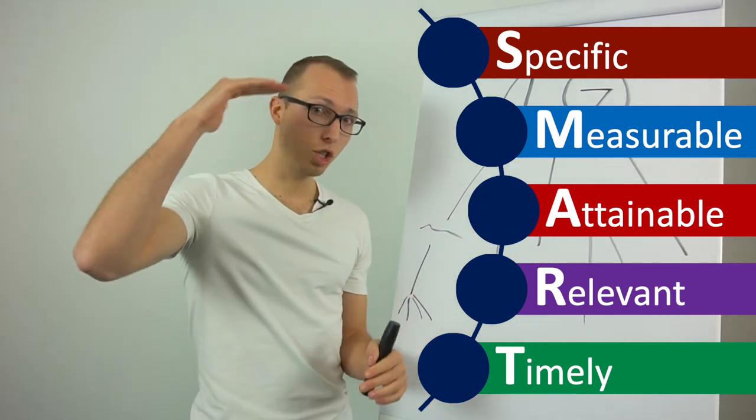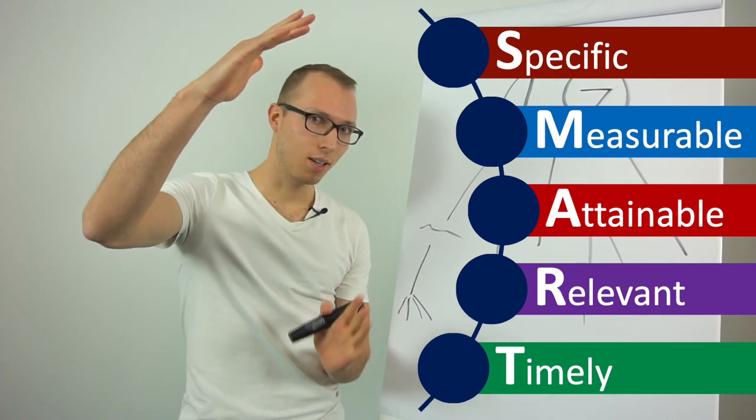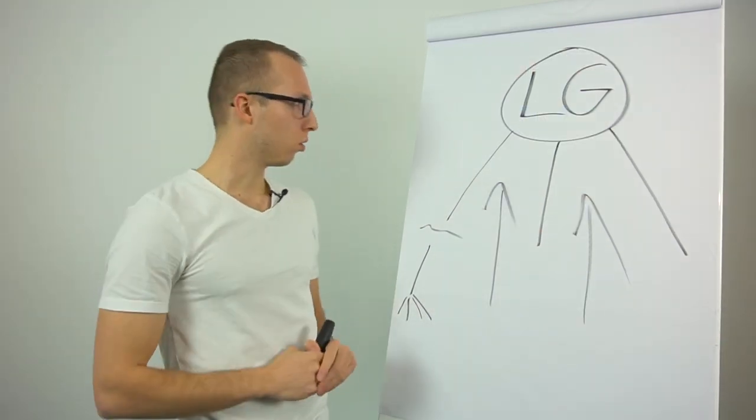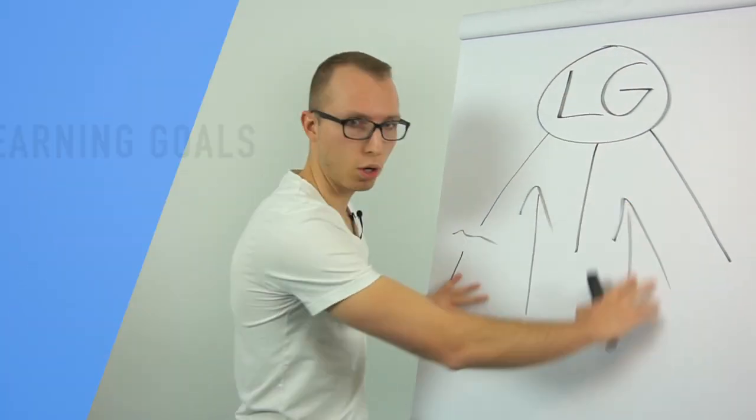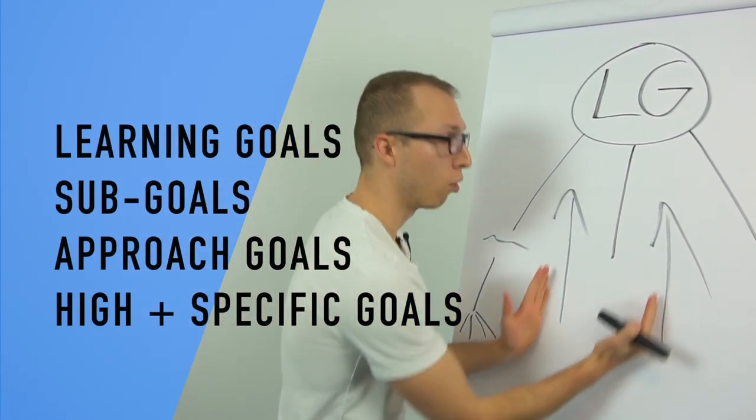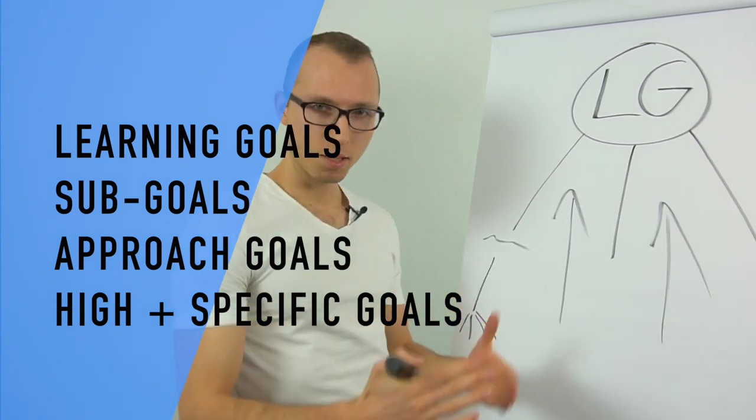Timely goals which is also again connected to being specific. Of course it needs to be relevant to your entire goal set in general and they also talked about attainability of course. So yes make it very challenging and high but it needs to be realistic. So specific and high goals. To sum it up generally set learning goals. Do your sub goals. All goals need to be approach goals and set them high and specific.